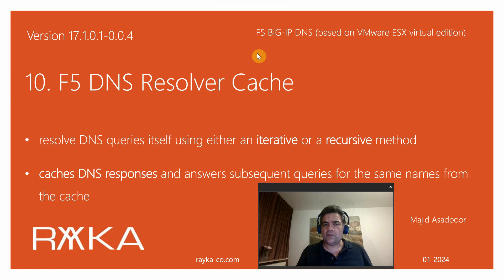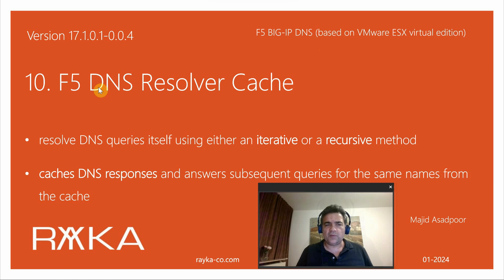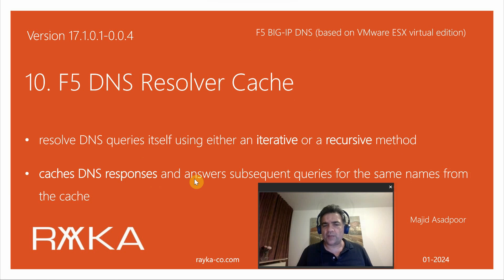Welcome to another video of the course F5 BIG-IP DNS. In the previous section we introduced and implemented F5 DNS transparent cache. In this section I'm going to discuss and implement F5 DNS resolver cache, in which BIG-IP itself resolves DNS queries using an iterative or recursive method, caches DNS responses, and answers subsequent queries for the same name from the cache.